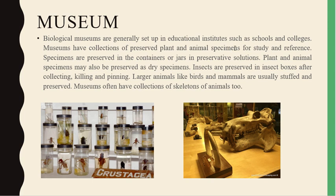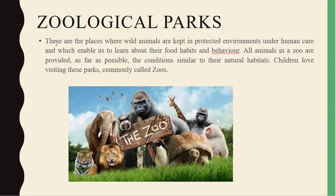Another example is museums. Biological museums are generally set up in educational institutes, as seen in schools and colleges. Museums have collections of preserved plants and animal specimens for study and reference. Specimens are preserved in containers or jars with preservative solutions. Plants and animal specimens may also be preserved as dry specimens. Insects are preserved in insect boxes after collecting, killing, and pinning. Larger animals are usually stuffed and preserved, and museums often have collections of animal skeletons too.